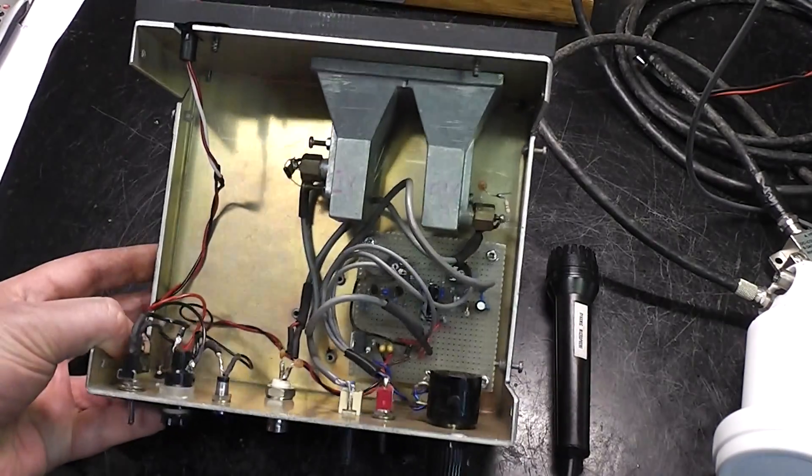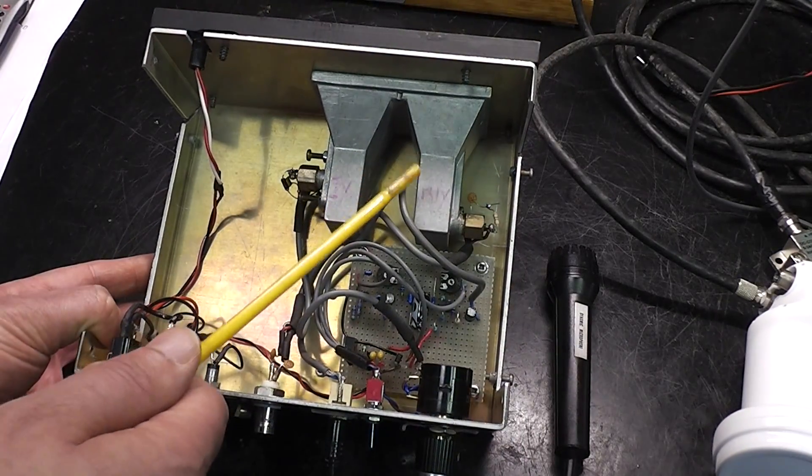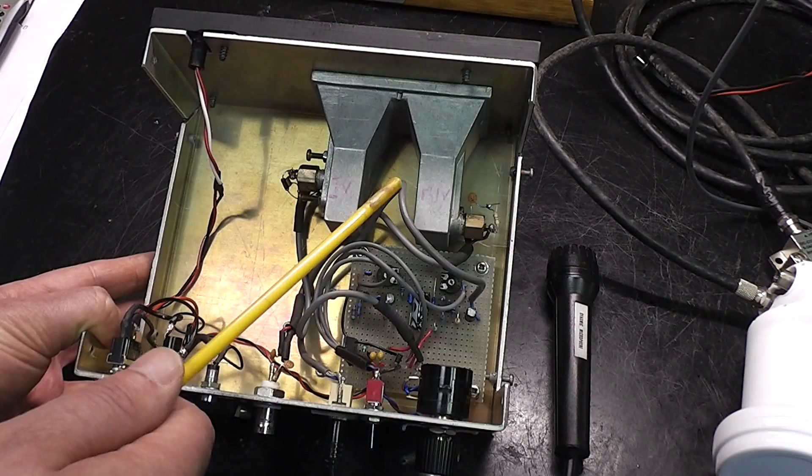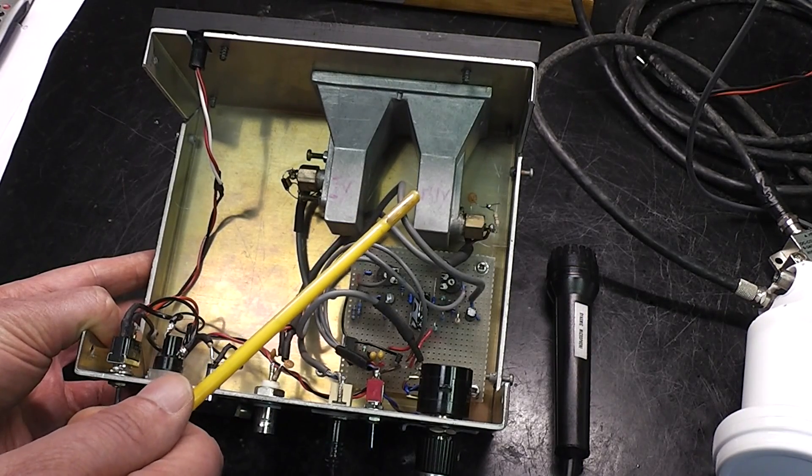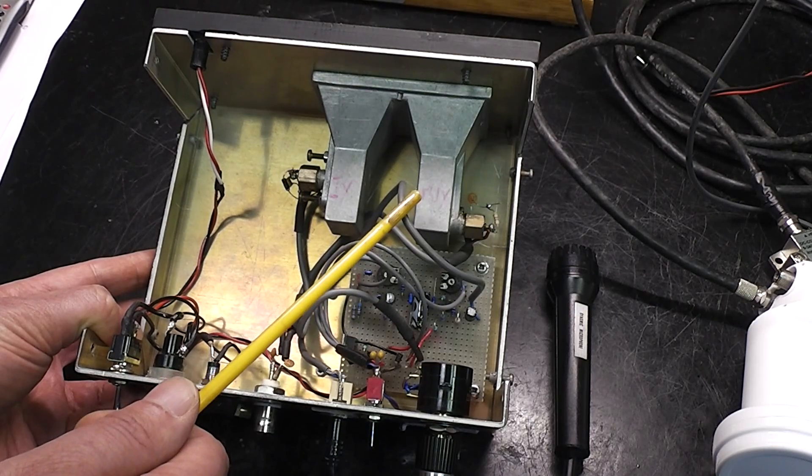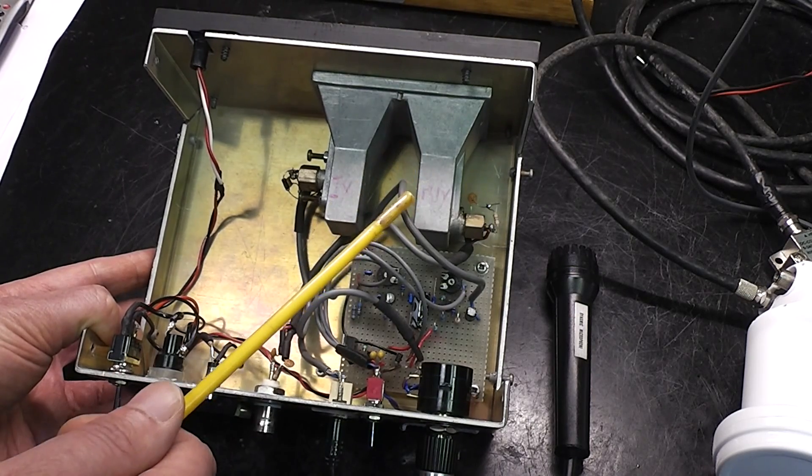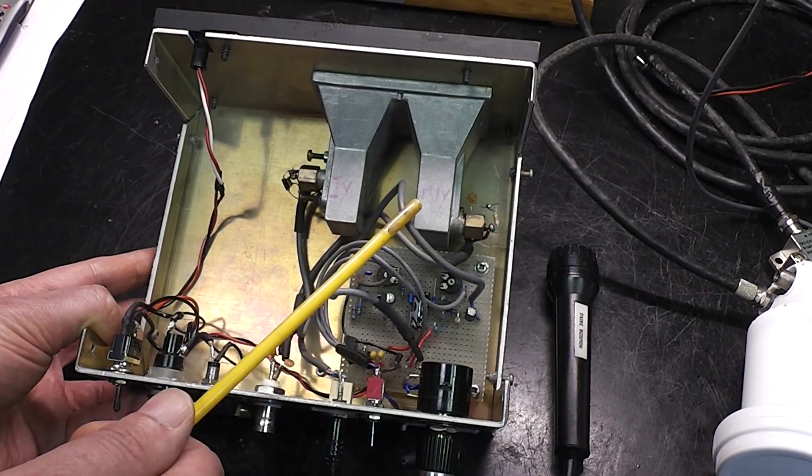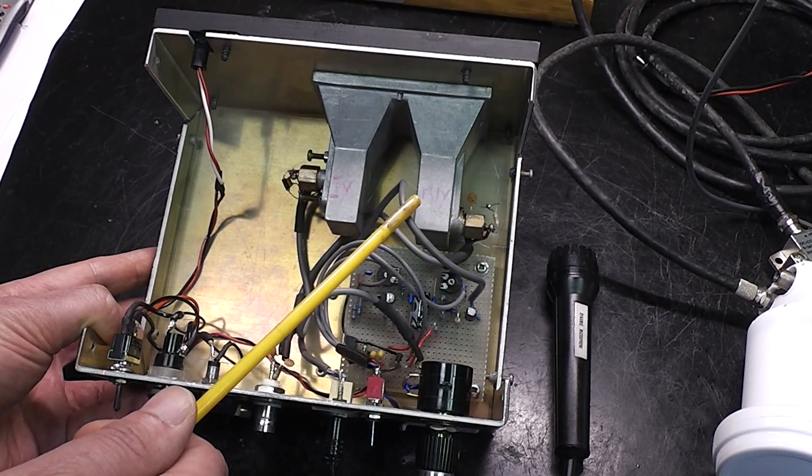Just looking inside the unit you can see the two gun diodes. One of them is a mixer diode that was used originally when it was an alarm system. I'm not using this in this application, instead I'll be relying on an LNB for reception.